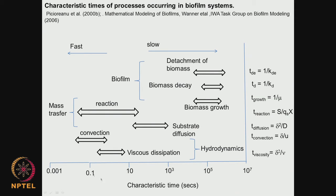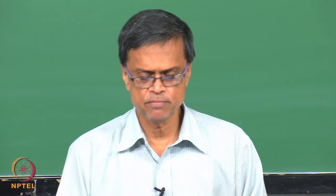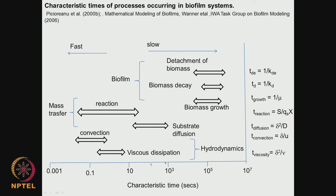This is a very interesting picture I have developed based on these references. Mass transfer, reaction, substrate diffusion, and convection are all happening very fast — around 0.1 to 10 seconds. Whereas biomass growth, biomass decay, and detachment of biomass are happening on the order of 1,000 to 100,000 seconds — much slower. So the mass transfer, hydrodynamics, and diffusion are much faster compared to biofilm formation, which is much slower — almost by 1,000 to 10,000 times.